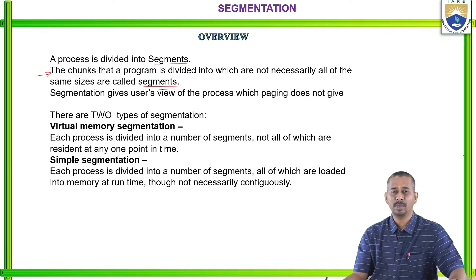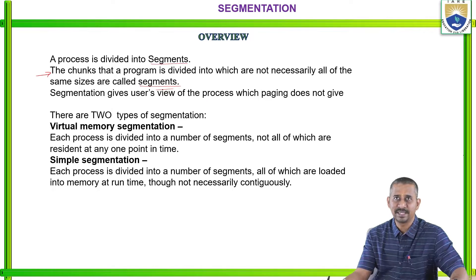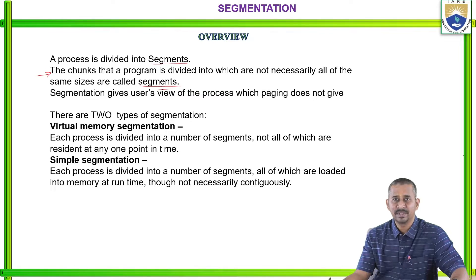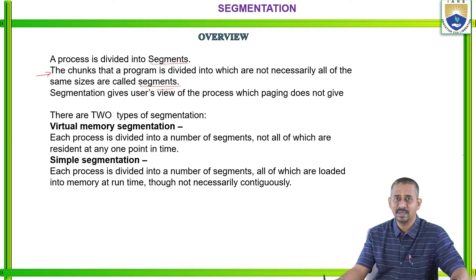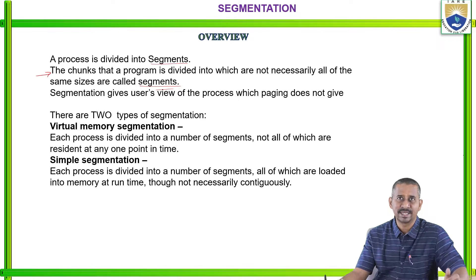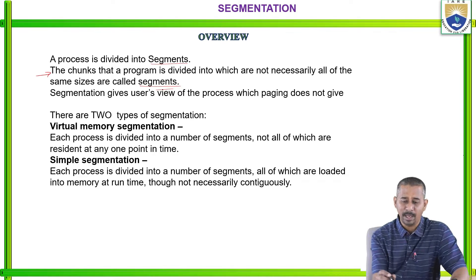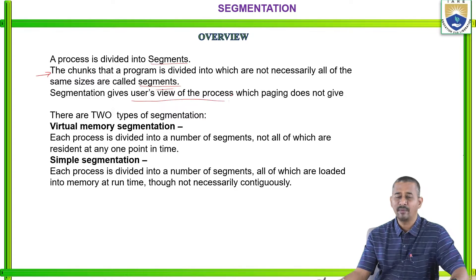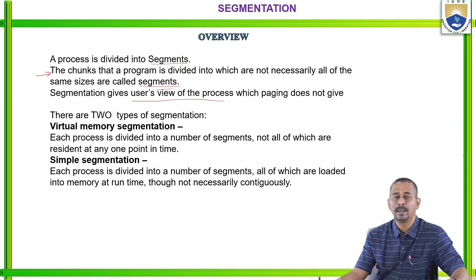According to our previous concept — paging — each and every process is divided into fixed-sized blocks, in the form of frames as well as pages. Whereas in the case of segmentation, the program is divided into certain parts called segments. Segmentation gives a user's view of the process, which does not happen in the paging concept.